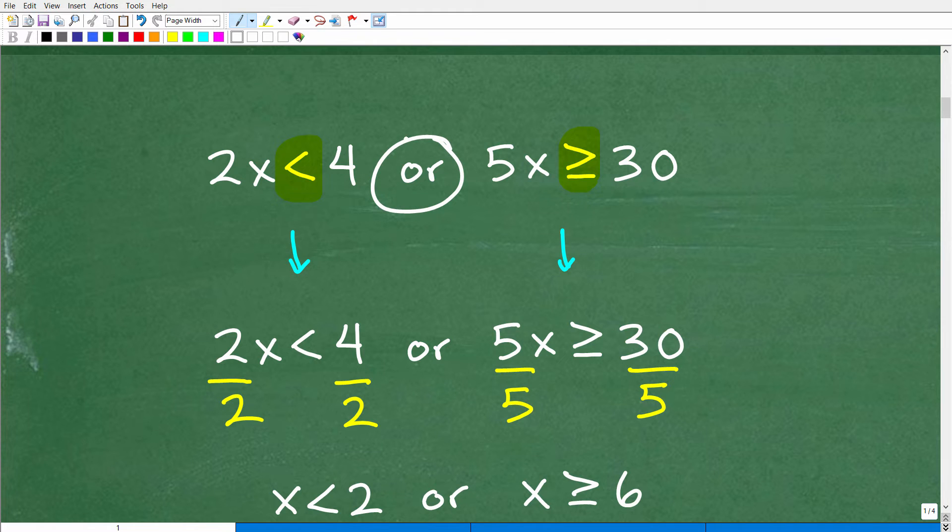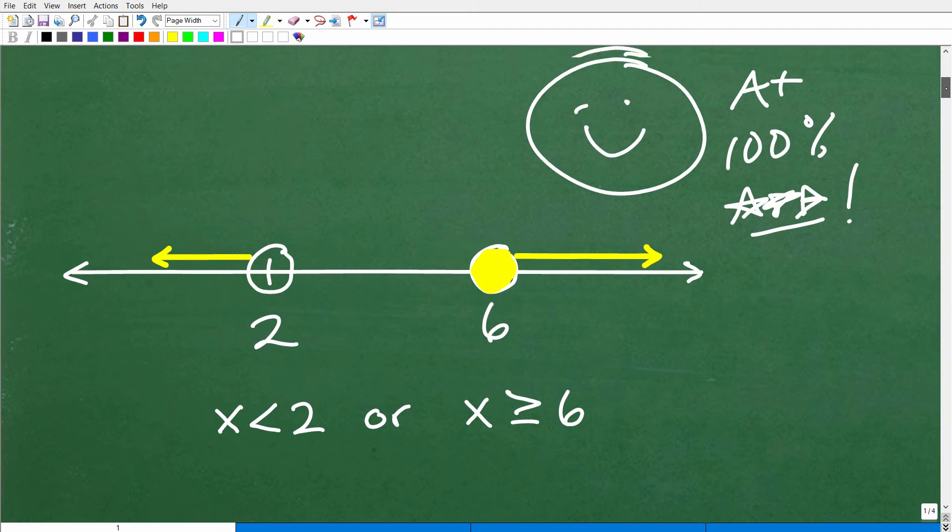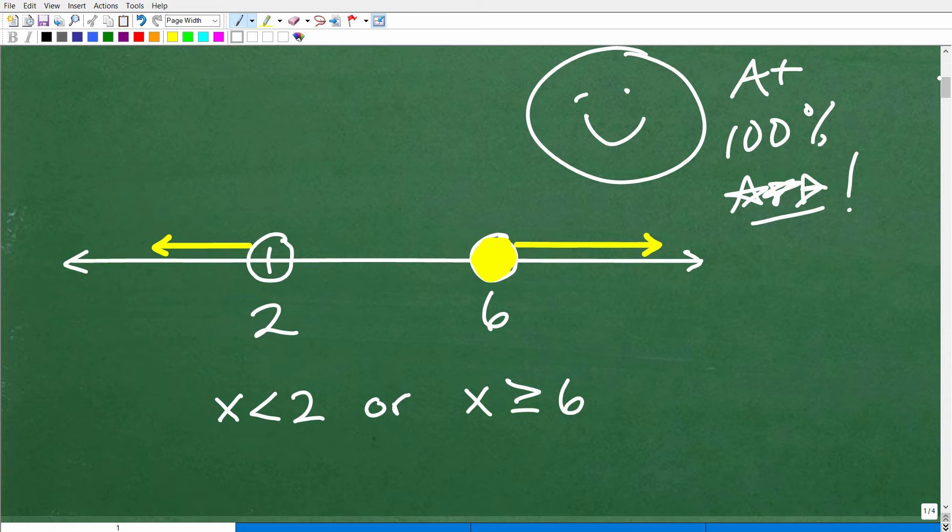But I do want to talk about this word right here, or. So, when you're dealing with a compound inequality, we're saying this word, or. Now, here's the deal. Compound inequalities are going to be those inequalities that have the word or or and. So if I could have wrote this problem as 2x is less than 4 and 5x is greater than or equal to 30. Actually, this one worked out because this is an or situation. But anyways, when you're dealing with those words or and and, you're talking about a compound inequality. And I want to explain this real quick before we get into the rest of the solution here.